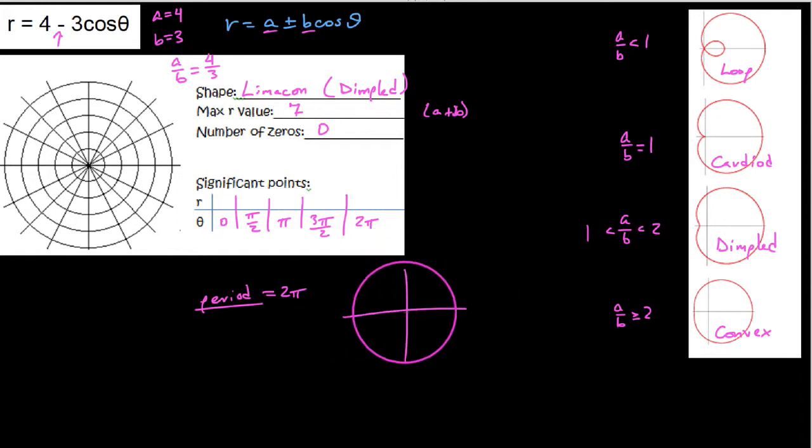And plugging these into our function, here we go. We say, well, it helps to have your unit circle on you. But knowing those ordered pairs, because our circle has a radius of 1, is a good idea. So we say, alright, we'll start at the cosine of 0. Cosine of 0 is 1, so 4 minus 3 times 1 is going to be 4 minus 3, which is 1.